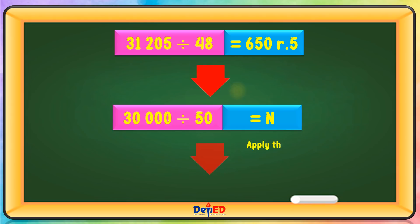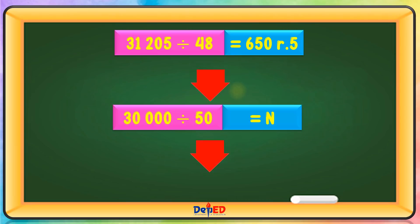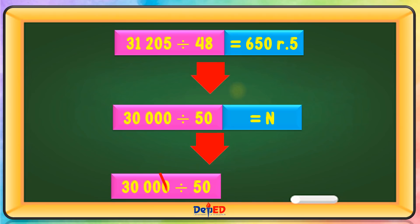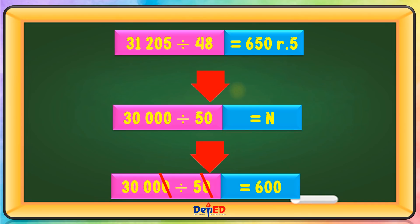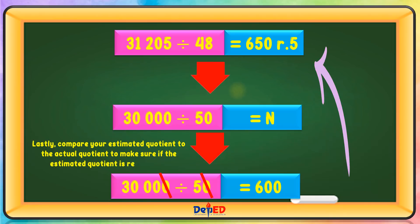Apply the rules of cancellation for dividing rounded numbers. 30,000 divided by 50 — let's cancel it first — equals 600. Lastly, compare your estimated quotient to the actual quotient to make sure if the estimated quotient is reasonable.